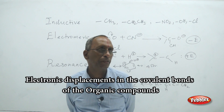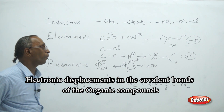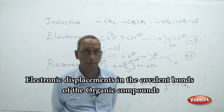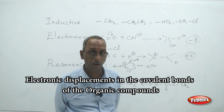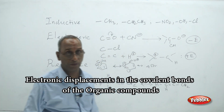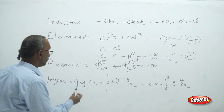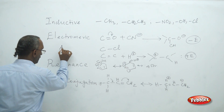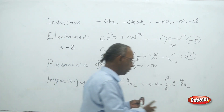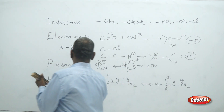We can see some electronic displacements in the covalent bonds of organic compounds. Organic compounds are generally covalent compounds. Covalent compounds are formed by the mutual sharing of electrons. Electronic displacement means if you consider any covalent bond between two general atoms A and B, each atom gives one electron to its sharing.